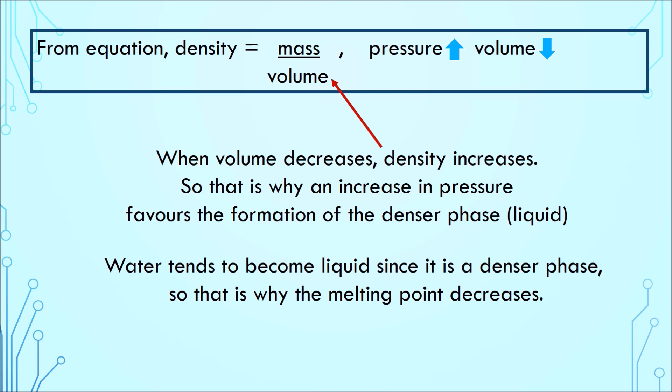We can also explain this through equation. Density, as you know, is mass per unit volume. When volume decreases, density increases. So, that is why an increase in pressure favors the formation of the denser phase, which is liquid. Water tends to become liquid since it is a denser phase. So, that is why the melting point decreases.